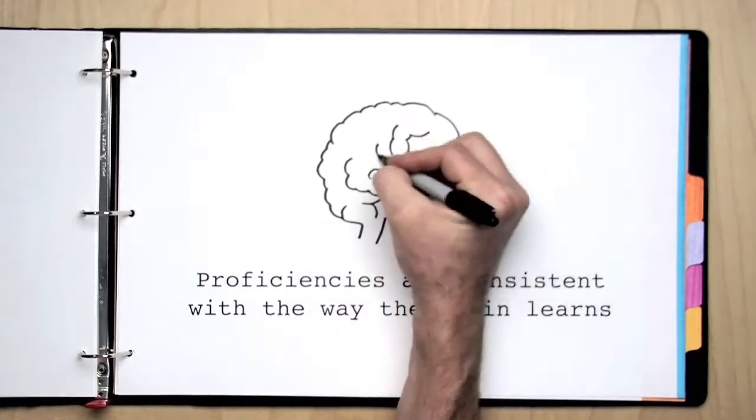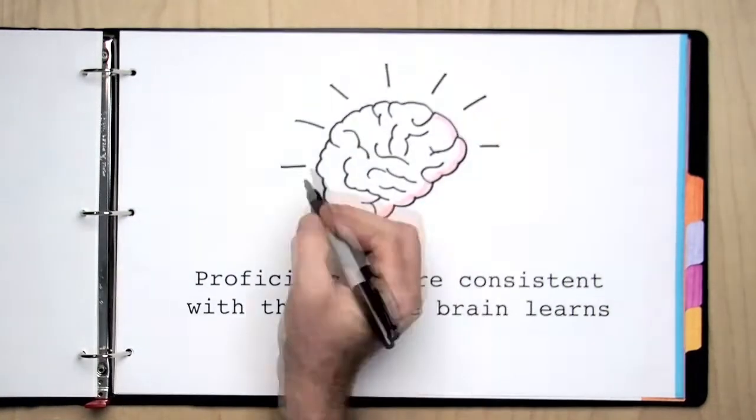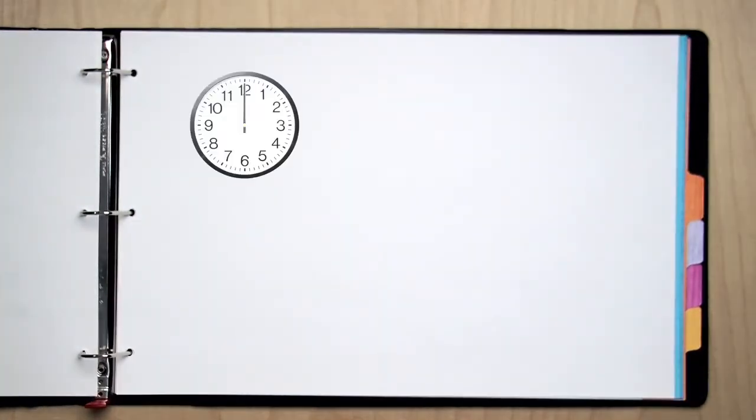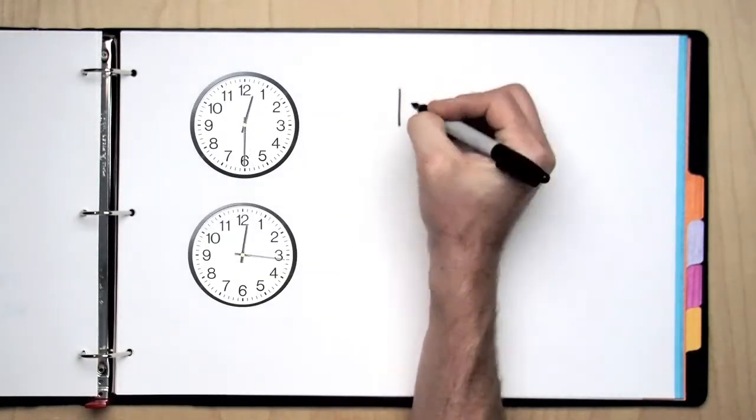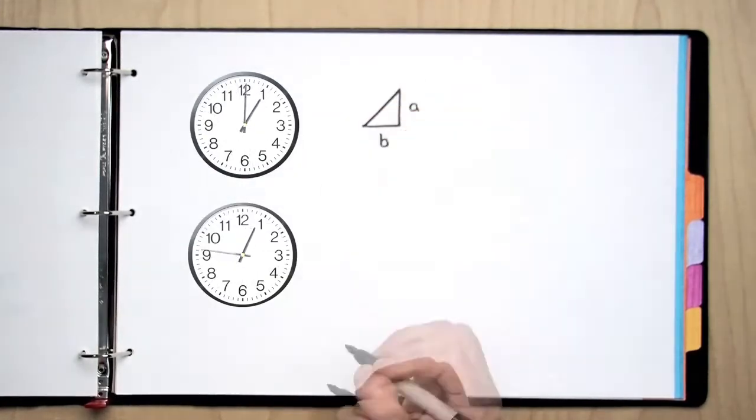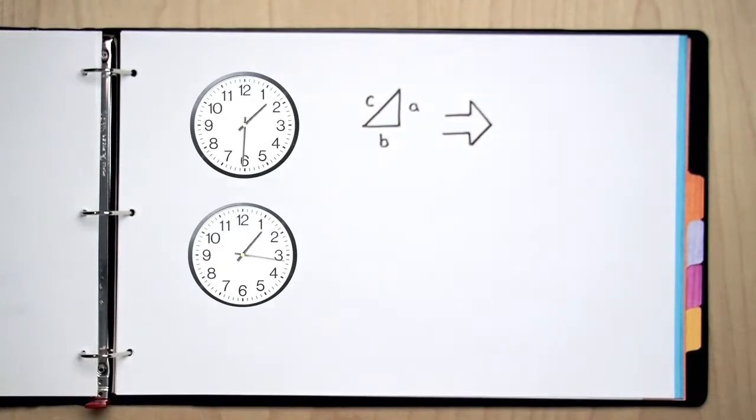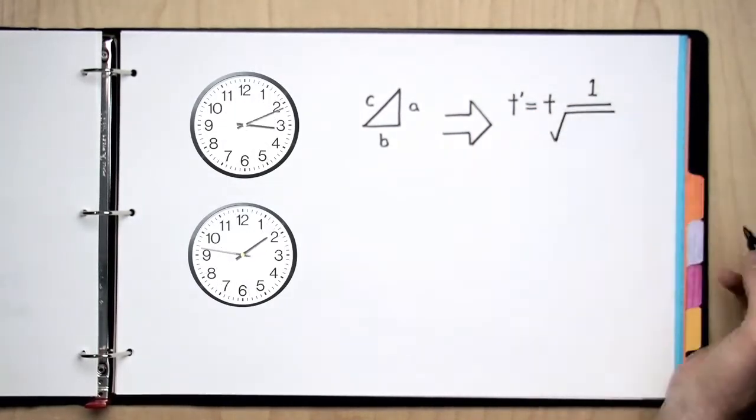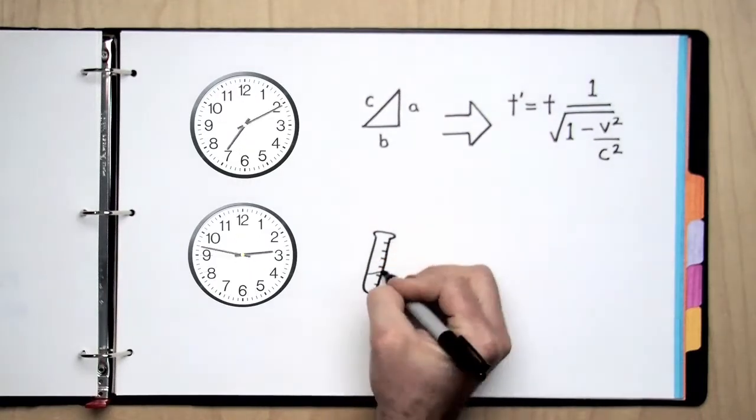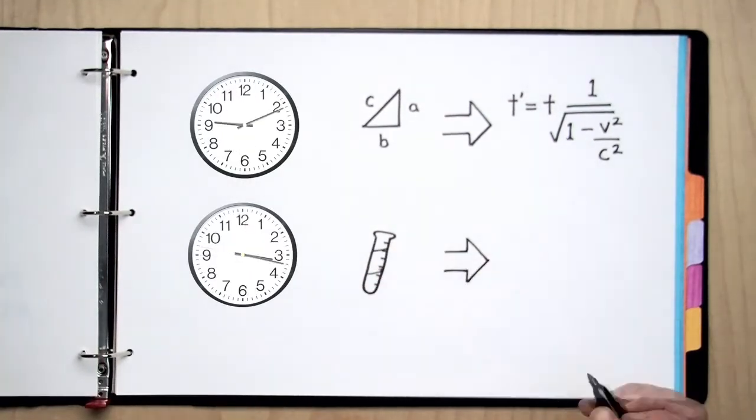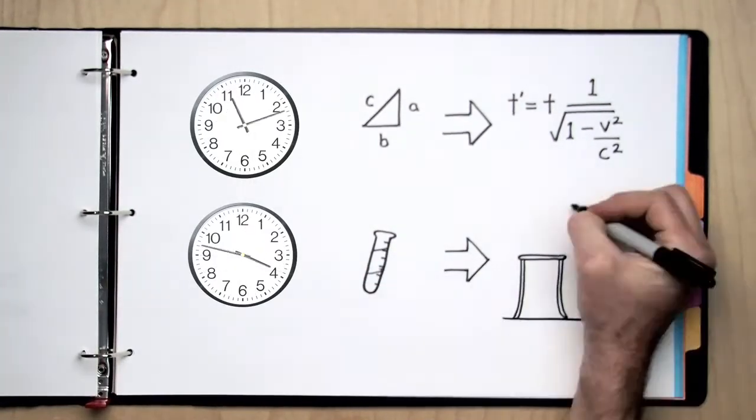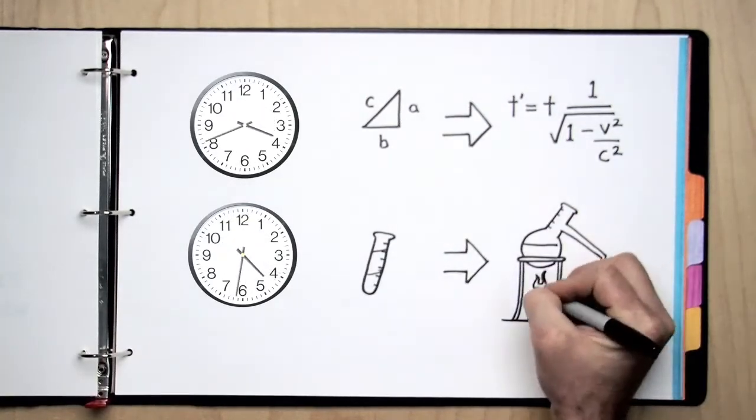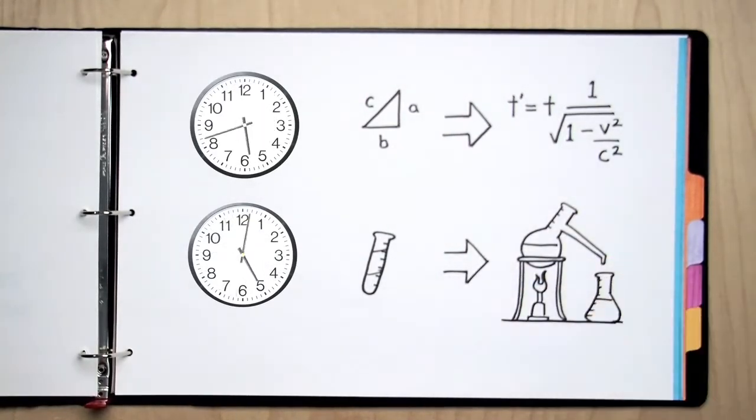Proficiencies match the way the brain learns. We know each of us learns different subjects at different rates. Proficiency-based learning lets people advance through school at their own pace. I may be great in math and be able to pick up the pace in that subject, but I might need more time to master science. Proficiencies allow us to match our pace of learning in each subject. With more time, practice, feedback, and support, I can reach proficiency even in challenging subjects.